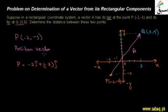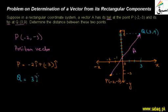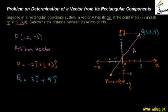Similarly, I can write the position vector of point Q, which is (3, 9). So Q vector equals 3î plus 9ĵ. That means 3 distance moved in the X direction and 9 distance moved in the Y direction.